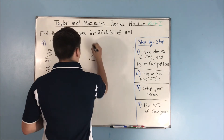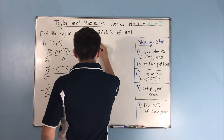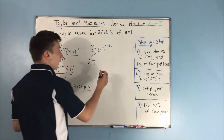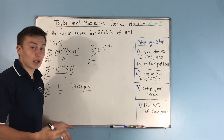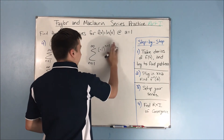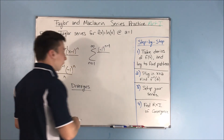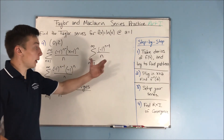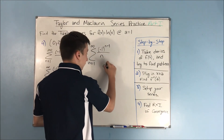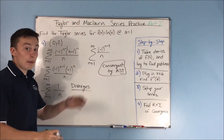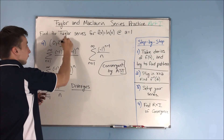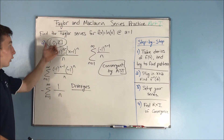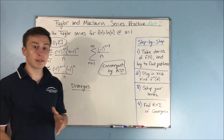Let's try plugging in x equals 2. We end up with negative 1 to the n minus 1 times 2 minus 1 to the n — that's 1 to the n, which is just 1. So we don't need to write that down. We have negative 1 to the n minus 1 over n. This is the alternating harmonic series, and it is convergent by the alternating series test. That means we will be including this endpoint.